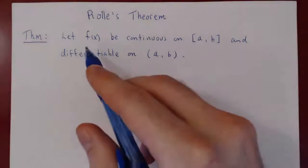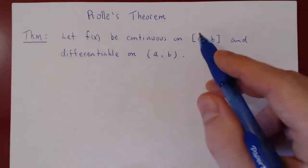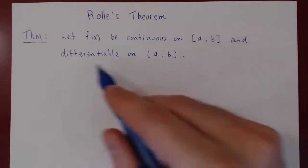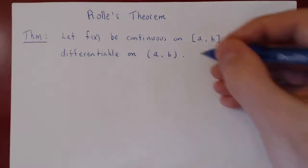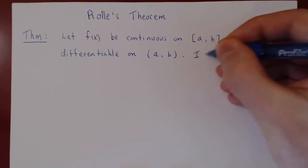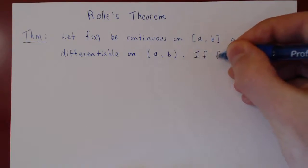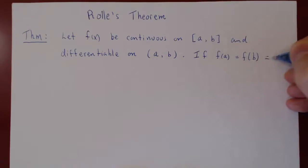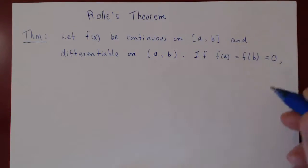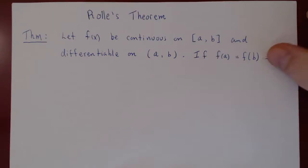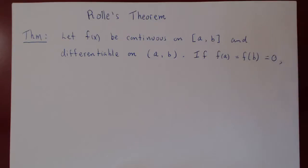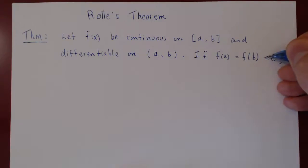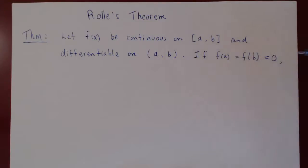So these are the assumptions: f of x is continuous on the closed and bounded interval [a, b], and also differentiable on the open interval (a, b). One last condition: if f of a equals f of b equals 0. And it doesn't have to be 0, but this simplifies the argument and the proof.